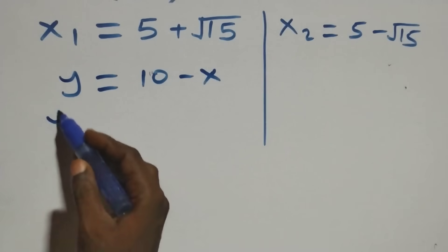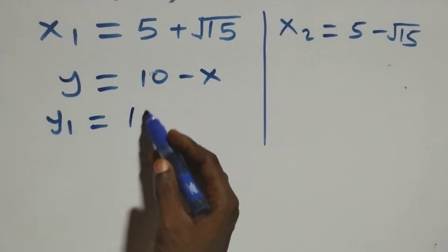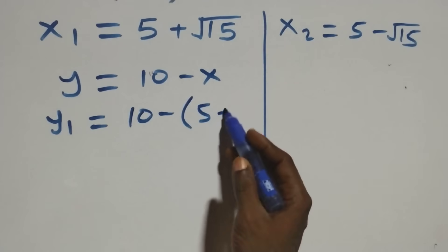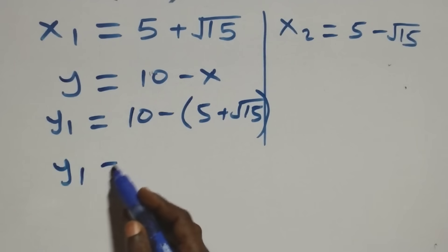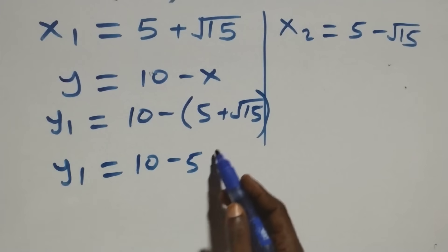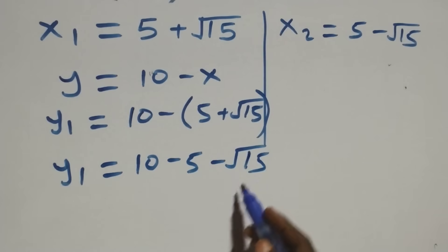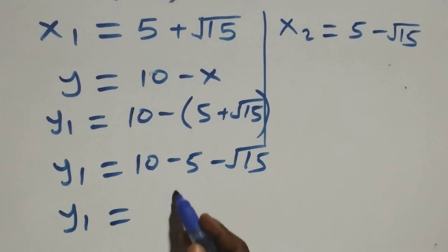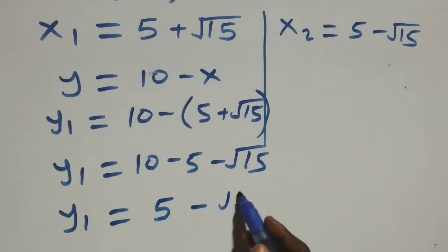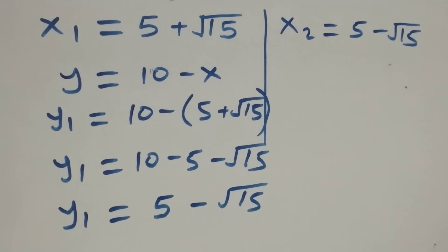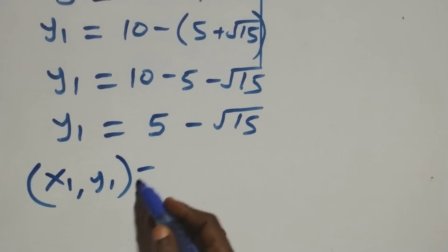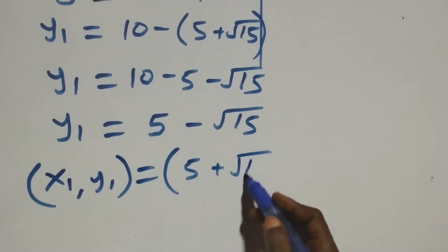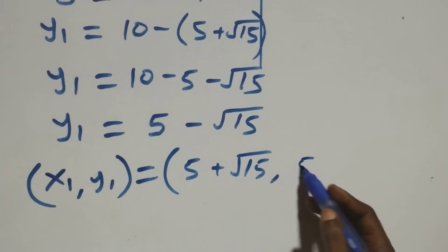So y₁ equals to ten minus x₁, which is ten minus (5 plus √15). Opening the bracket: y₁ equals to ten minus 5 then minus √15, so y₁ equals to 5 minus √15. The first set of solutions is: x₁ = 5 plus √15, y₁ = 5 minus √15.